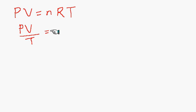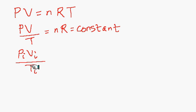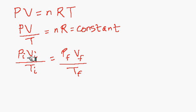PV divided by T is equal to nR, which is a constant. So no matter how the state of the gas changes — its pressure, volume, or temperature may change — this ratio of PV by T will always remain constant. For solving various problems we can use this in the form: P-initial times V-initial divided by T-initial equals P-final times V-final divided by T-final. In any problem, out of these six variables, any one may be unknown which you have to find or solve for.